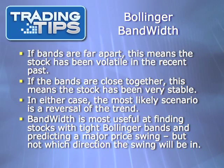If a stock's Bollinger Bands are far apart, this means the stock has been volatile in the recent past. If the bands are close together, this means the stock has been consolidating. In either case, the most likely scenario is a reversal of the trend. Stocks with wide bands have been volatile and are due to stabilize, while stocks with tight bands have been consolidating and are likely to break one way or another. It is in this latter case in which Bollinger Band Width is most useful.